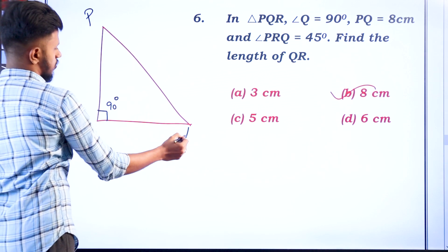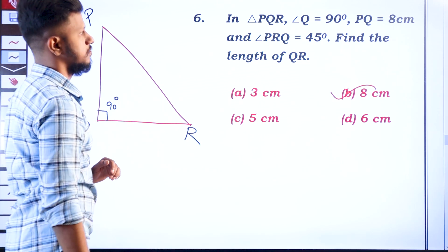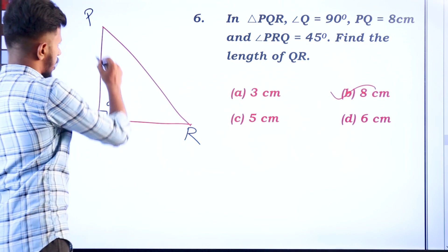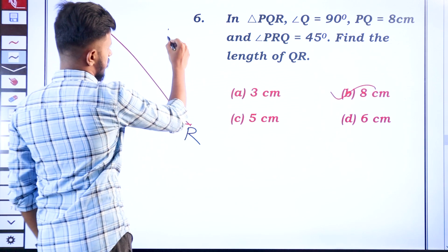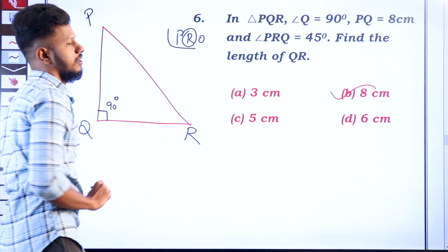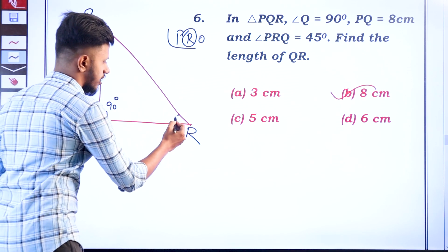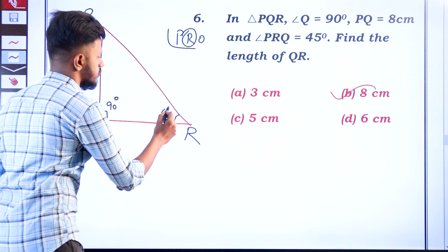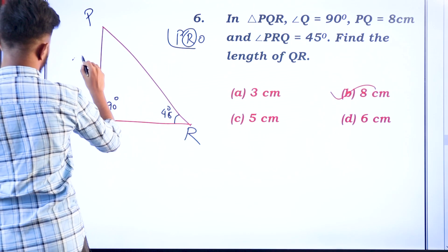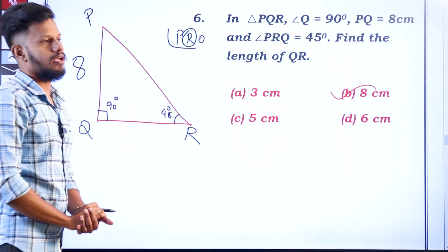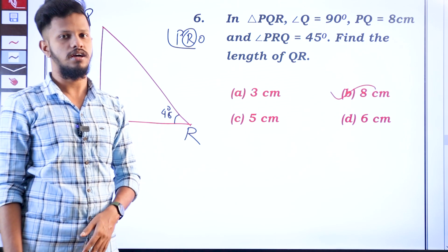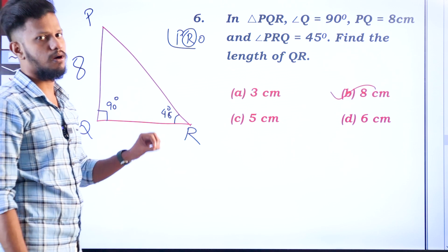Now, let's take the length of the triangle. The triangle has a 90 degree angle, and angle RQ is 45 degrees. Angle PRQ — so R is on the same line, so this is 45 degrees. The next point is angle PQ is equal to 8cm. Now, I know the 3rd angle: the sum of angles of a triangle is 180 degrees.